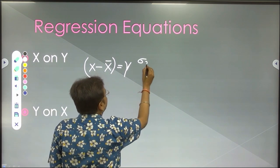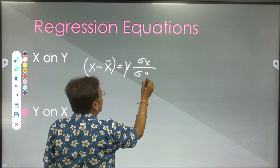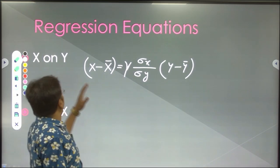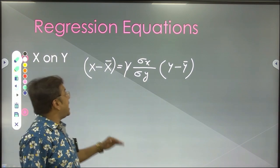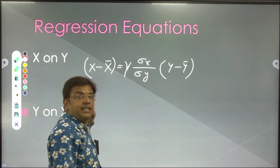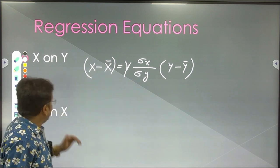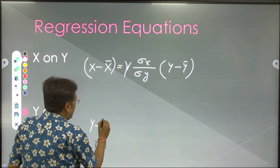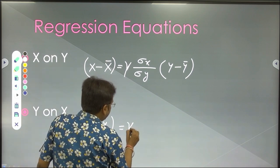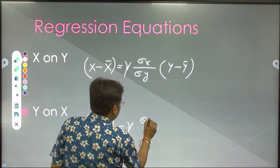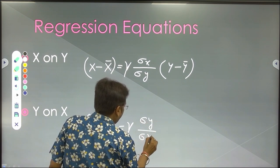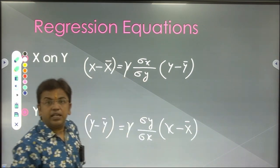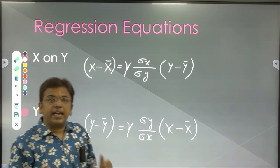In the regression equation x on y, the x value will be on your right-hand side and the y value on the left-hand side. The second equation, regression equation y on x, is: y minus y-bar equals the coefficient of correlation multiplied by standard deviation of y upon standard deviation of x, times x minus x-bar. These are the two regression equations on which we analyze our data.